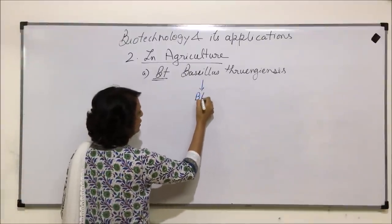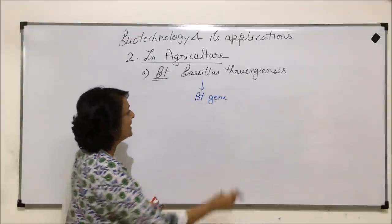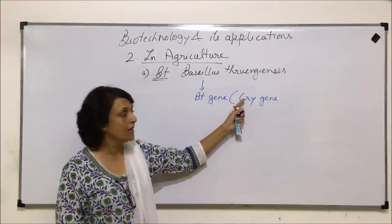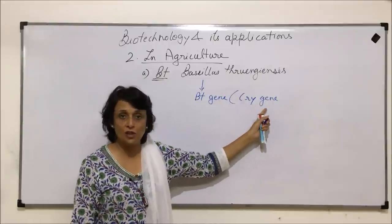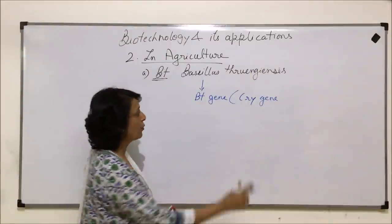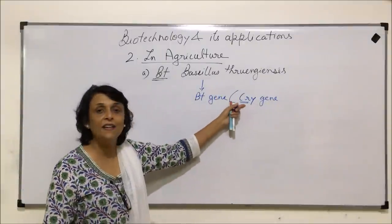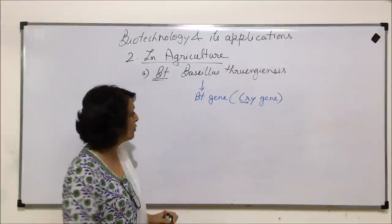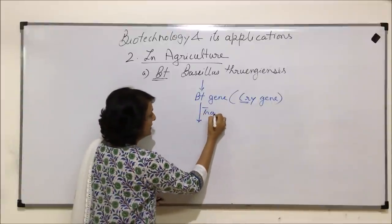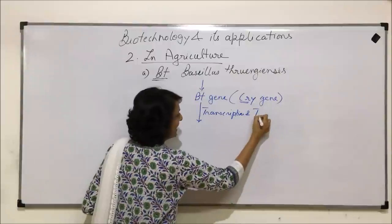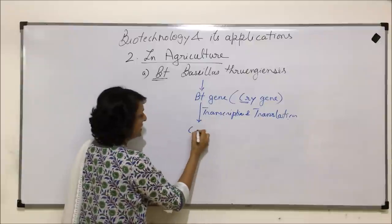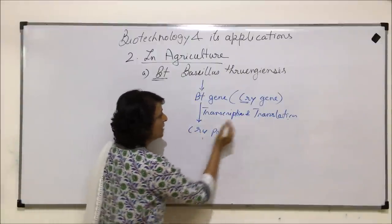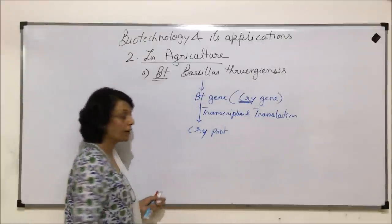This bacterium has a gene which we call the BT gene, also known as the cry gene. When written in italics, cry refers to the gene, and when written in simple form, it refers to the protein. We are talking of a gene here. This gene is known as the cry gene because the protein which is synthesized is a crystalline protein. This BT gene undergoes transcription and translation to synthesize cry protein.